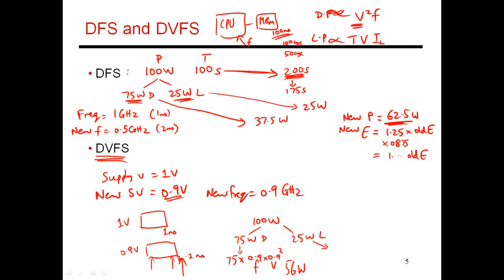And then the 25 watts is the leakage power, which is a linear function of supply voltage. So since this has gone down from 1 to 0.9 volts, this will go down to 22.5 watts. So 25 times 0.9. So the net power consumption is about 77 watts.